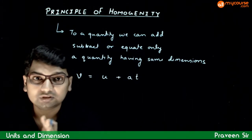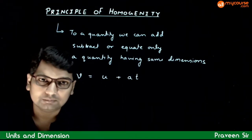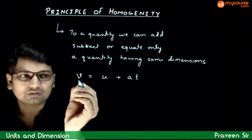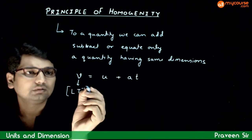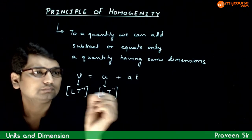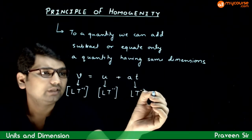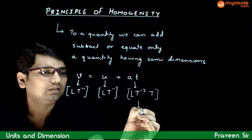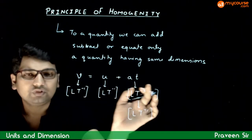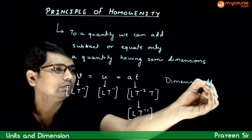That's what principle of homogeneity says — aek equation ke jitne bhi terms hai, V, U, aur A T, in sab ke dimensions same honi chahiye. Let's check whether this equation is dimensionally correct or not. V is velocity, so iska dimension hai L T inverse. U is also initial velocity, to iska dimension hai L T inverse. What about A T? Acceleration ka dimension hai L T minus 2, aur time ka dimension hai T, that is basically equal to L T inverse. So, we can say that the dimension of each and every term of this equation are same, so this equation is dimensionally correct.